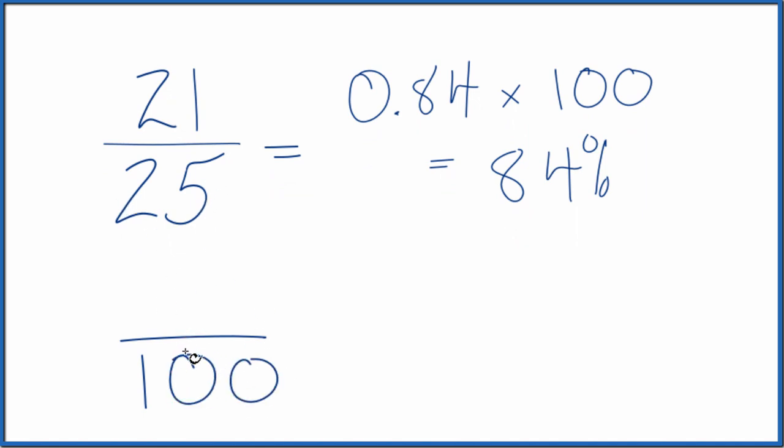So 4 times 25 is 100. 4 times 21 is 84. And a number over 100, that's just the percent. So 84%, you got a B, just like we found before.